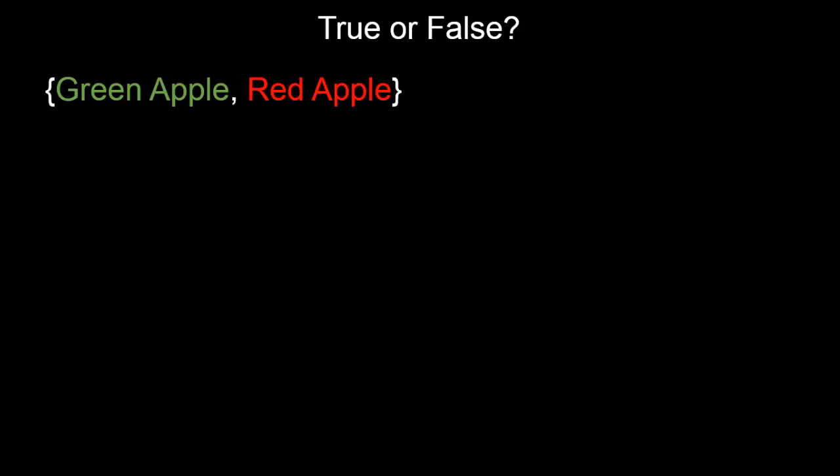Here's a similar one. Is the set green apple, red apple the same as the set that consists of just red apple? Again, the answer is no. Because if we regard a green apple as being a distinct object from a red apple, then the set on the left contains green apple but not the set on the right. So the two sets could not possibly be the same set.